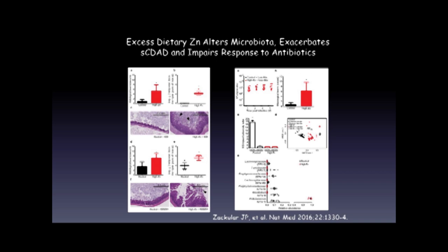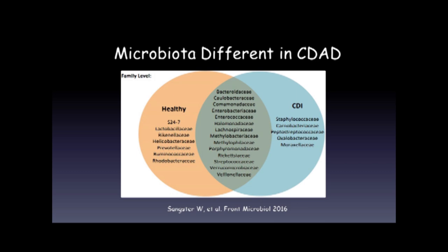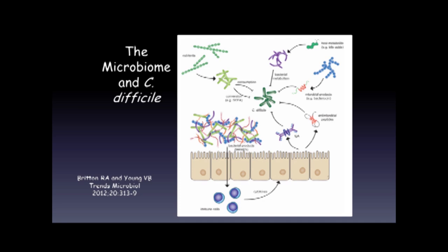In patients who are at risk for C. difficile, their microbiota is different. We're beginning to understand the complex interactions between your normal microbiome and the risk for C. difficile, which involves bacterial metabolism, particularly the influence of bile acids and short-chain fatty acids.